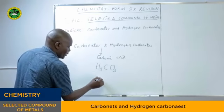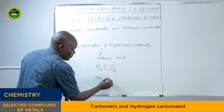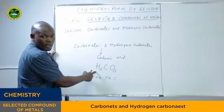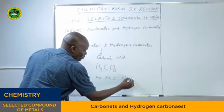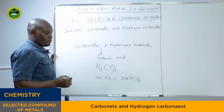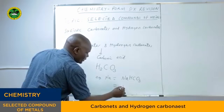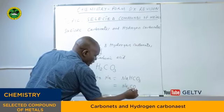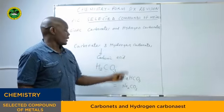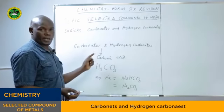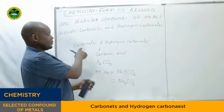Taking an example, if sodium replaces one hydrogen in carbonic acid, then you have sodium hydrogen carbonate. But if both hydrogen atoms are replaced by a metal, it will be sodium carbonate. Our concern here is mainly only carbonates.